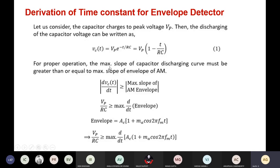For proper operation, the maximum slope of the capacitor discharging curve must be greater than or equal to the maximum slope of the envelope. Differentiating the discharging curve Vc(t) = Vp · (1 − t/RC), we get Vp/RC. Taking the magnitude, this must be greater than or equal to the maximum d/dt of the envelope. The envelope is represented as AC · (1 + m · cos(2πfmt)).